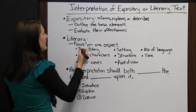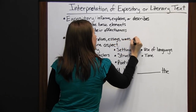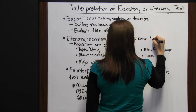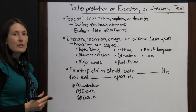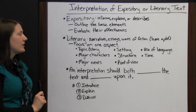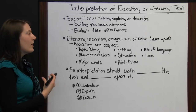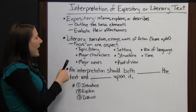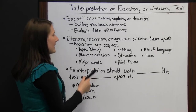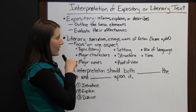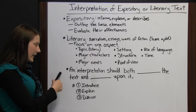Literary is a little bit different. Literary works are going to be your narratives, essays, works of fiction — these are going to have a plot and there's going to be more to go through. Because there will be so much more to literary works, you want to focus on just one aspect to give your interpretation. You don't want to try to cover all the elements because that would be too much. Some aspects you could choose from are: the topic of the story, major characters, major events, the setting, structure, point of view, use of language, or tone. Pick one, focus on that one, and your interpretation should both describe the text and elaborate upon it.